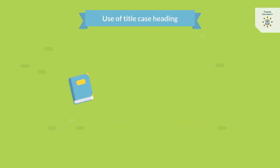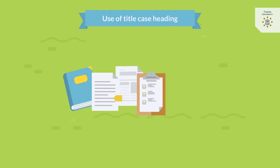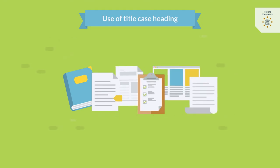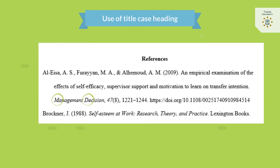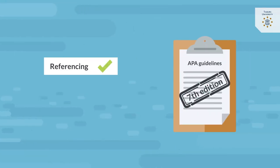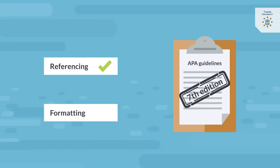When referring to the titles of books, chapters, articles, reports, web pages, or other sources, capitalise only the first letter of the first word of the title and subtitle, the first word after a colon or a dash in the title, and proper nouns. However, capitalise all major words in the titles of journals. Please be aware that there is also a knowledge clip on how to format your document according to APA guidelines.